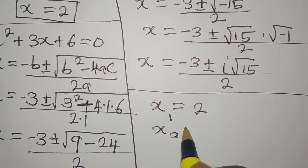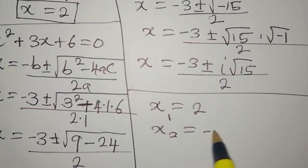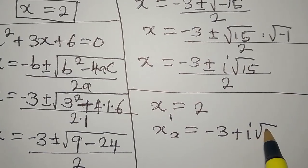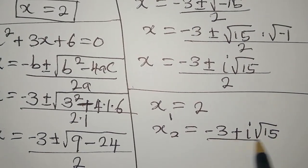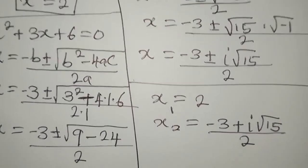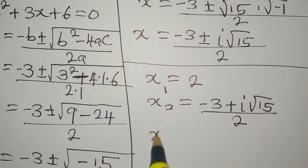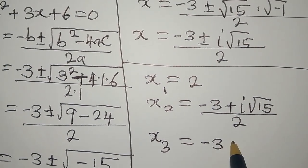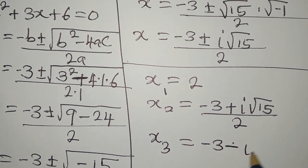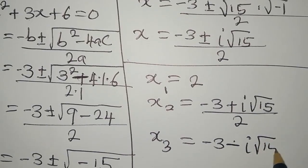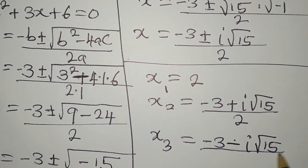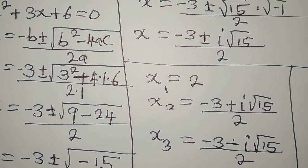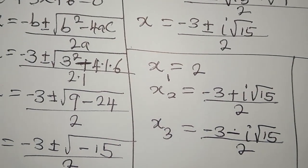Bringing all three solutions together: x₁ = 2, x₂ = (-3 + i√15) / 2, and x₃ = (-3 - i√15) / 2. These are the three solutions to the equation.